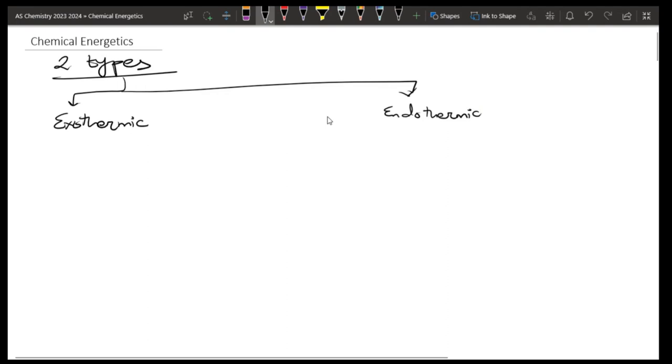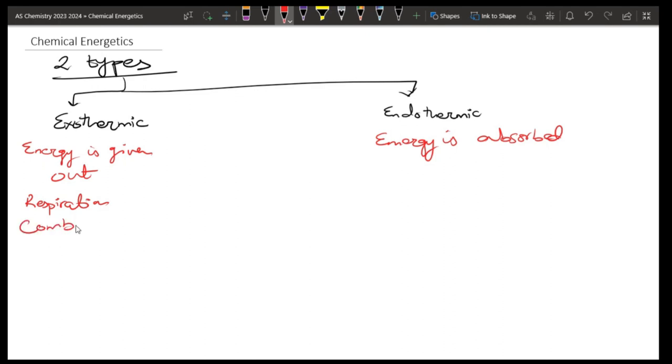What will happen in exothermic? In exothermic, energy is given out. And in endothermic reactions, energy is absorbed. For example, exothermic examples are respiration and combustion. Endothermic reactions can be shown in photosynthesis, thermal decompositions.